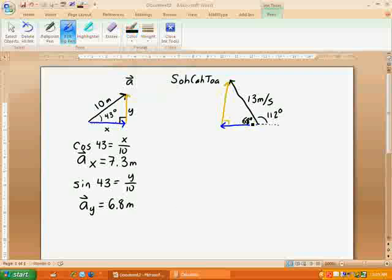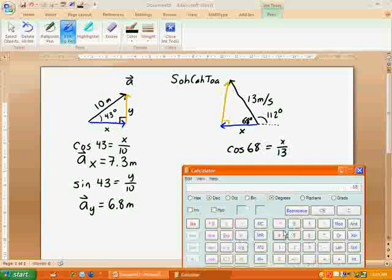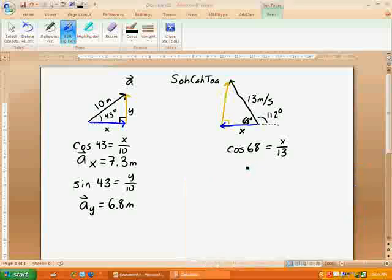So now that I have this being 68 degrees, I should be able to do my trig to get the x and y components. Let's start with the x component. That's adjacent over hypotenuse. So the cosine of 68 equals the adjacent over the hypotenuse. When I do that on my calculator, I'll do 68 cosine. So there's cosine of 68, and I'll multiply by 13. And I've got 4.9. So vector b, the x component is 4.9 meters per second.